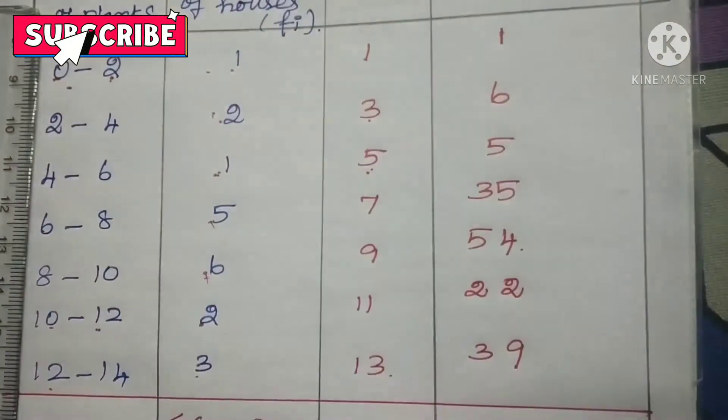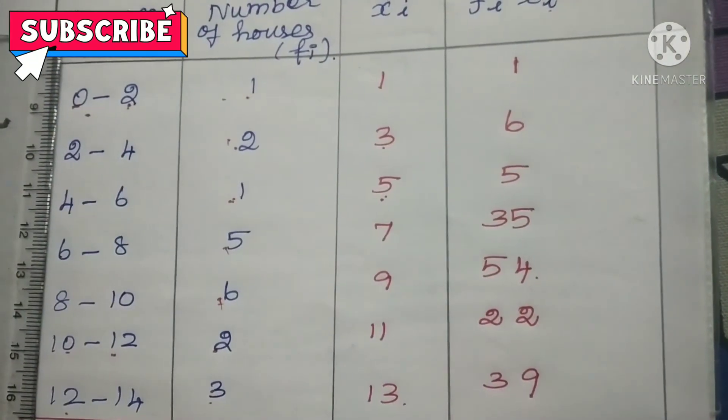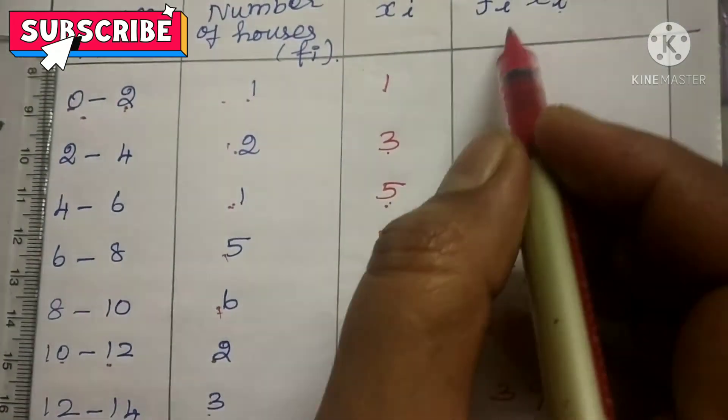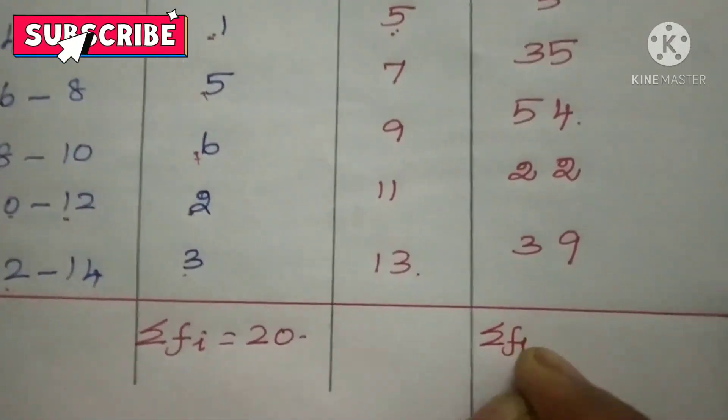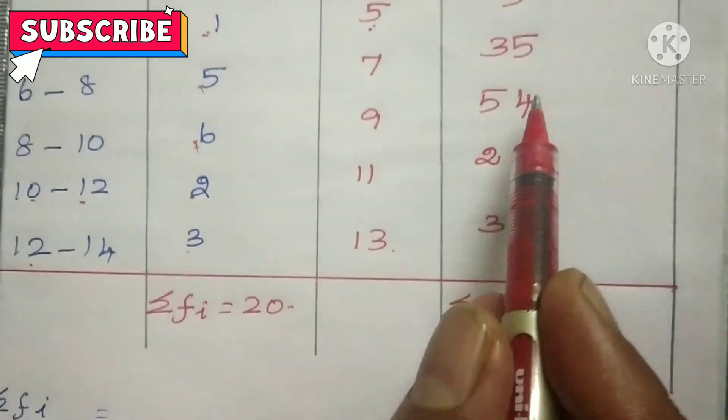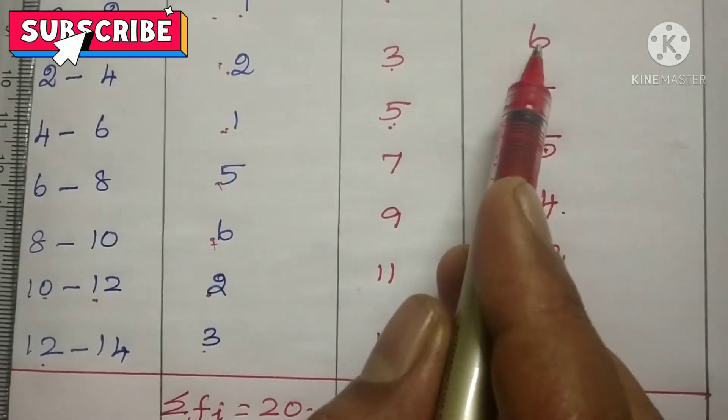Then we no need to find sigma Xi. The formula is sigma Fi Xi divided by sigma Fi. Therefore I am going to find sigma Fi Xi. That is equal to first 9 plus 2 is 11. 11 plus 4 is 15. 15 plus 5 is 20.